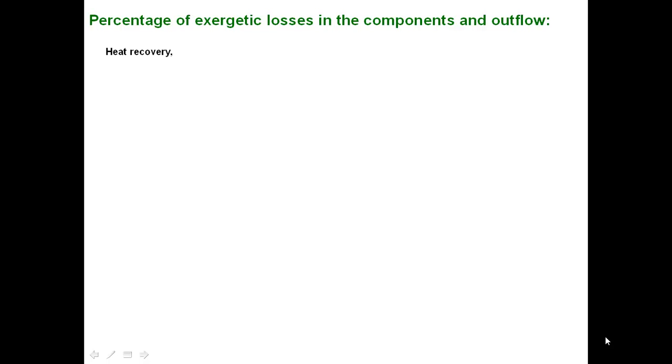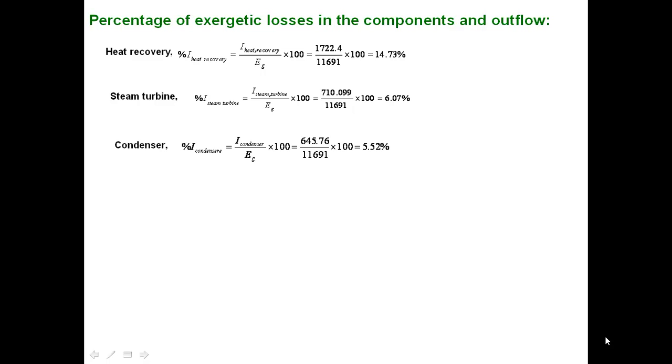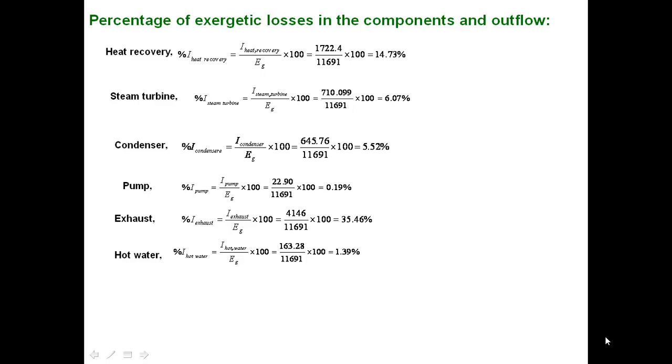Therefore, the percentage of irreversibility in the heat recovery is identified as 14.73%. It is the ratio of irreversibility in the heat recovery and exergy value of hot gas. Similarly, for the steam turbine, it is 6.07%. For condenser, it is 5.52%. For pump, 0.19%. It is very low, it is minimum value. Exhaust is very high, it is 35.46% because the hot gas exit temperature from heat recovery is considered as 200 degree centigrade. Similarly, the hot water coming from the condenser, the associated percentage of irreversibility is 1.39%.